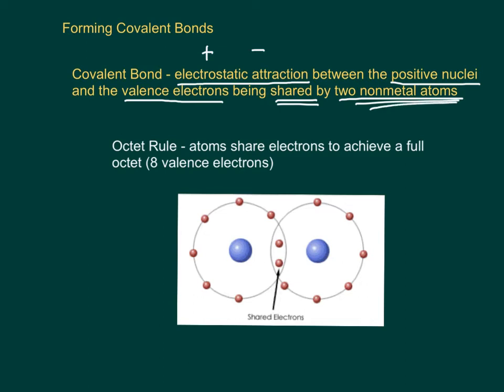They share electrons according to the octet rule. Everybody wants to share electrons so they can have a full octet, like the noble gases. Everybody wants to gain eight valence electrons. The only exception is going to be hydrogen, which wants to share so it can have two, like helium, because helium has two valence electrons.